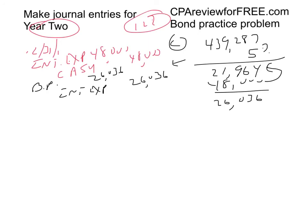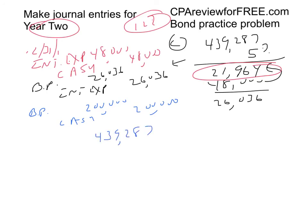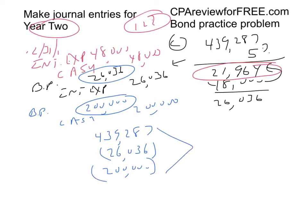We then make the $200,000 serial principal payment: debit bonds payable $200,000, credit cash $200,000. Question 1: interest expense in year two is $21,964 — the 5% of the principal balance. Question 2: the bond payable balance at end of year two starts at $439,287, reduced by $26,036 for the interest adjustment, and reduced by $200,000 for the payment, giving a final balance of $213,251.